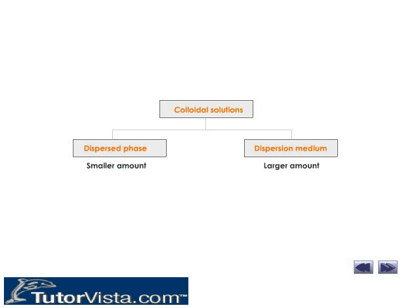Colloidal solutions consist of two phases called the dispersed phase and dispersion medium. Particles present in small amounts are called the dispersed phase. The particles present in excess, which behave like a solvent, are called the dispersing medium.